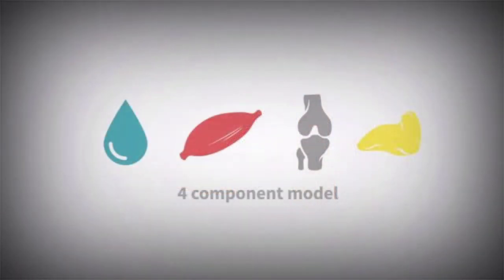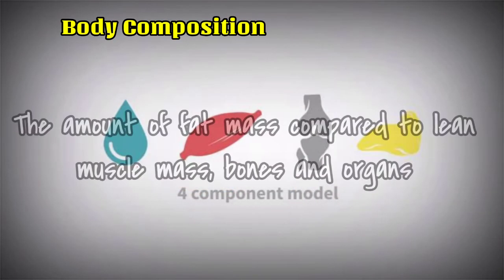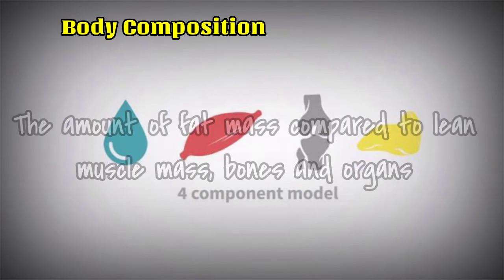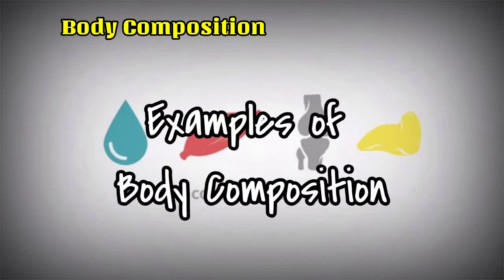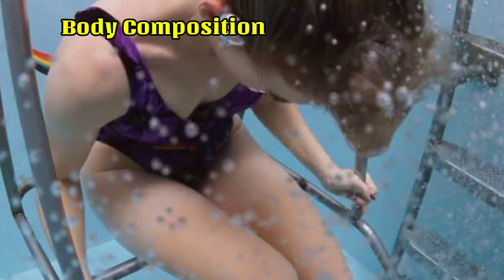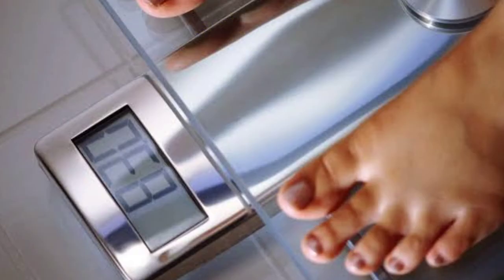Last is body composition. It is the amount of fat mass compared to lean muscle mass, bones, and organs. This can be measured using underwater weighing, skin fold readings, and bioelectrical impedance.